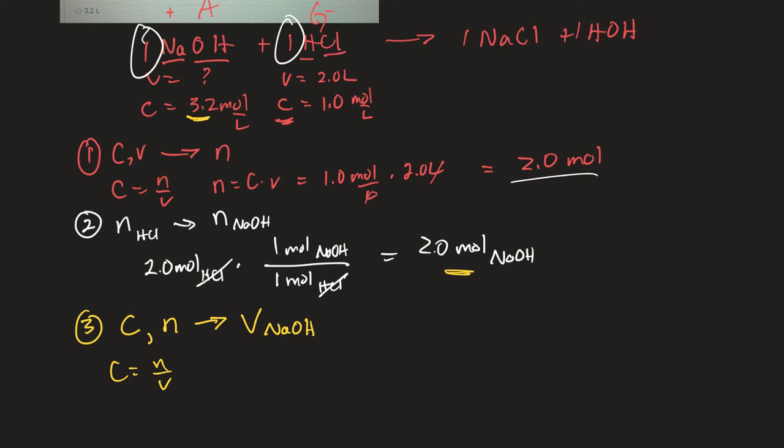So just like with the gas formulas, I can say V is equal to this cross, N times 1, divided by the other thing, which is concentration. So the moles are 2.0 moles of sodium hydroxide, divided by the concentration, which is 3.2 moles per liter of sodium hydroxide. So the moles cancel, and I'll go 2 divided by 3.2. No idea what that is.